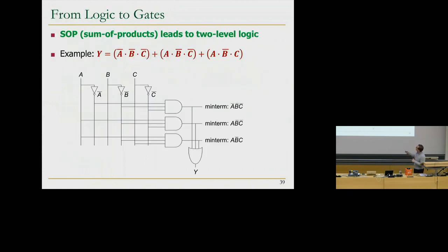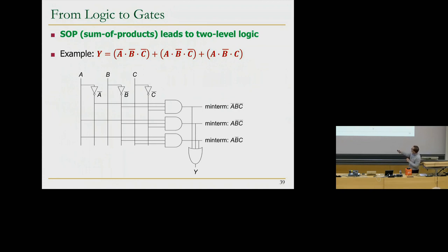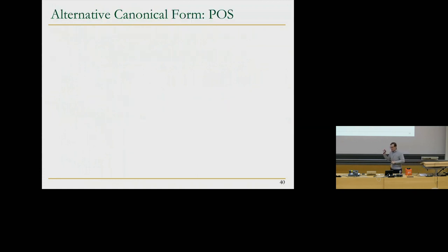If you build the circuit directly from the sum of products form, that's a two-level logic realization — all the minterms as AND gates feeding into one OR gate. For example, five three-input AND gates feeding into a four-input OR gate — but that's a maximal circuit. The canonical form leads to two-level AND-OR logic, but you don't want this maximal form; you want to minimize it.